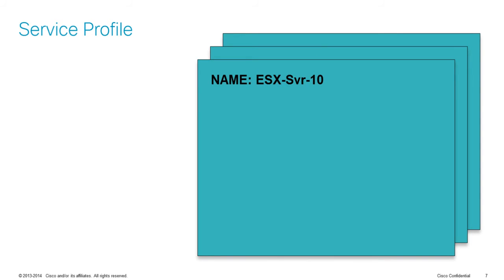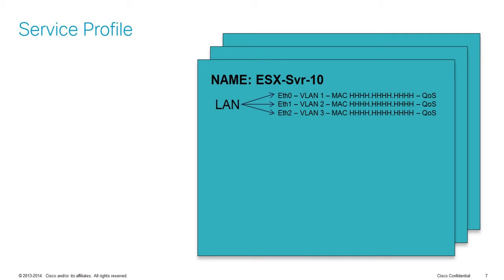I mentioned the term service profiles previously — let's take a closer look at what these are. A service profile is nothing more than an XML file that resides on the fabric interconnects and is then pushed to a specific server. To understand what such a file can contain, let's think of what we would need to provision a new server: LAN-related configuration, QoS policies, VLANs, MACs — and the same for SANs: VSAN port names, QoS settings, and VLANs.